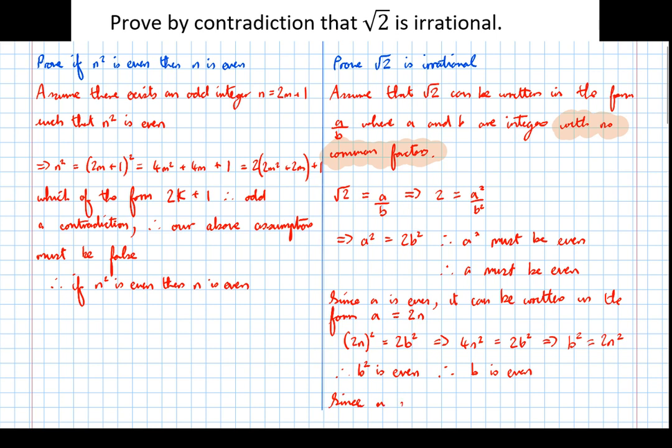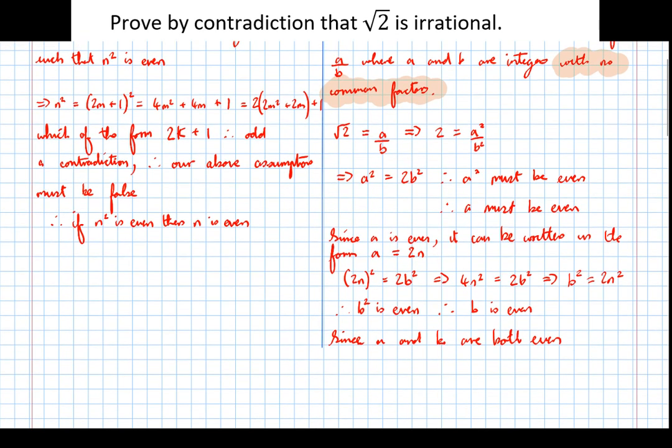Since a and b are both even, they share a common factor 2. And that's what contradicts our statement that we made just up here, this statement here. We said that we could write it as a over b where a and b have no common factors, but we've just proven that that can't be the case. We've just proven that a and b have to have a common factor of 2.